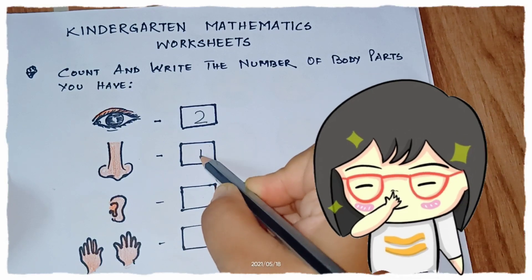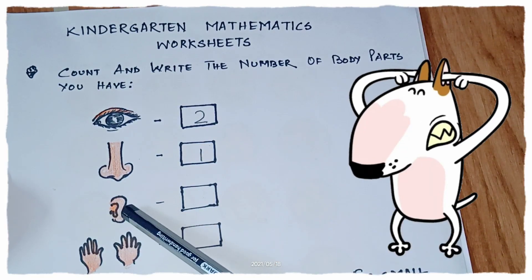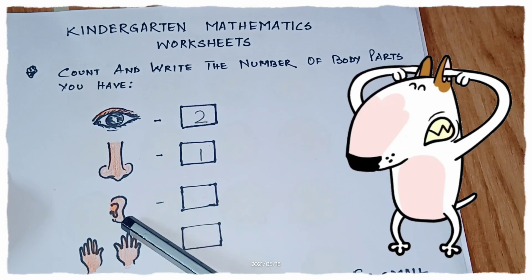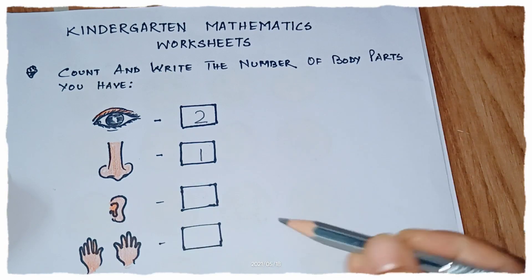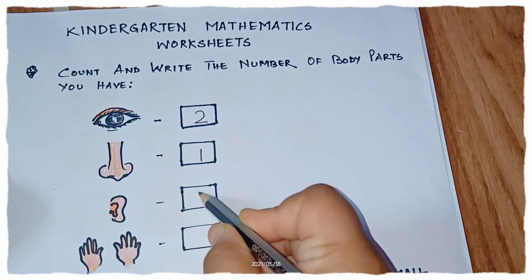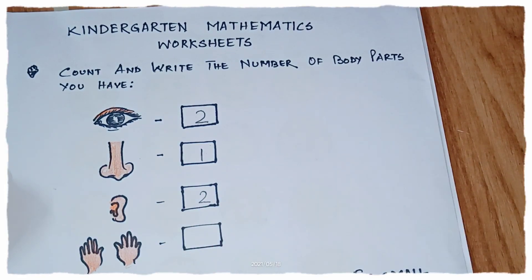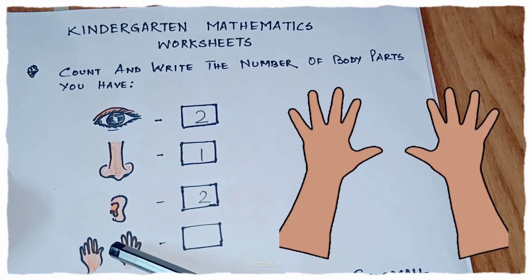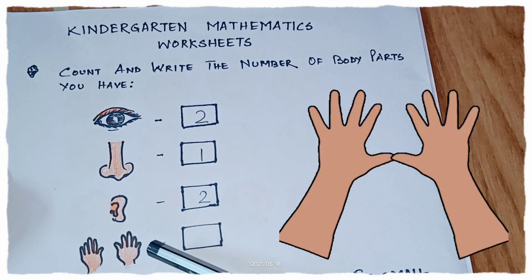What is this children? This is our nose. How many nose do we have? 1 nose. Now ears, how many ears do we have? Tell me how many ears we have. 2 ears, good.